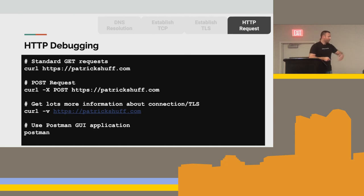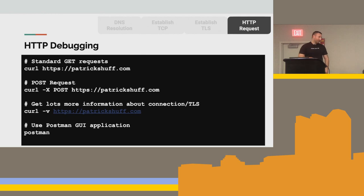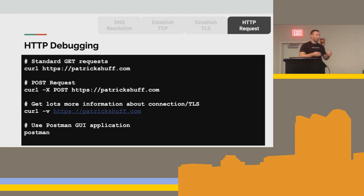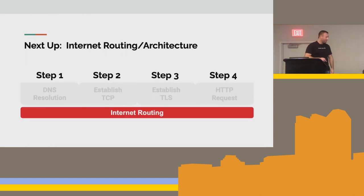For debugging, curl -v gives you tons of information. And if you're really into the GUI stuff, Postman is a really cool application for helping you debug HTTP requests on your API server or web server. It makes it really easy to programmatically do really complex things that you wouldn't want to do in curl.